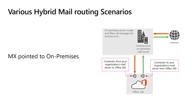Some organizations might have a business or regulatory need to route all messages through their on-premises server. For that requirement, you can point your domain's MX record to your organization's email server instead of Office 365. Inbound email is first delivered to your on-prem environment following the red arrow, and then routed to Exchange Online for mailboxes already migrated to cloud. In this scenario, the on-prem server has the responsibility to filter inbound messages. Many of our EOP and ATP filters do not work properly with this setup, and we recommend using enhanced filtering for connectors to overcome this limitation.